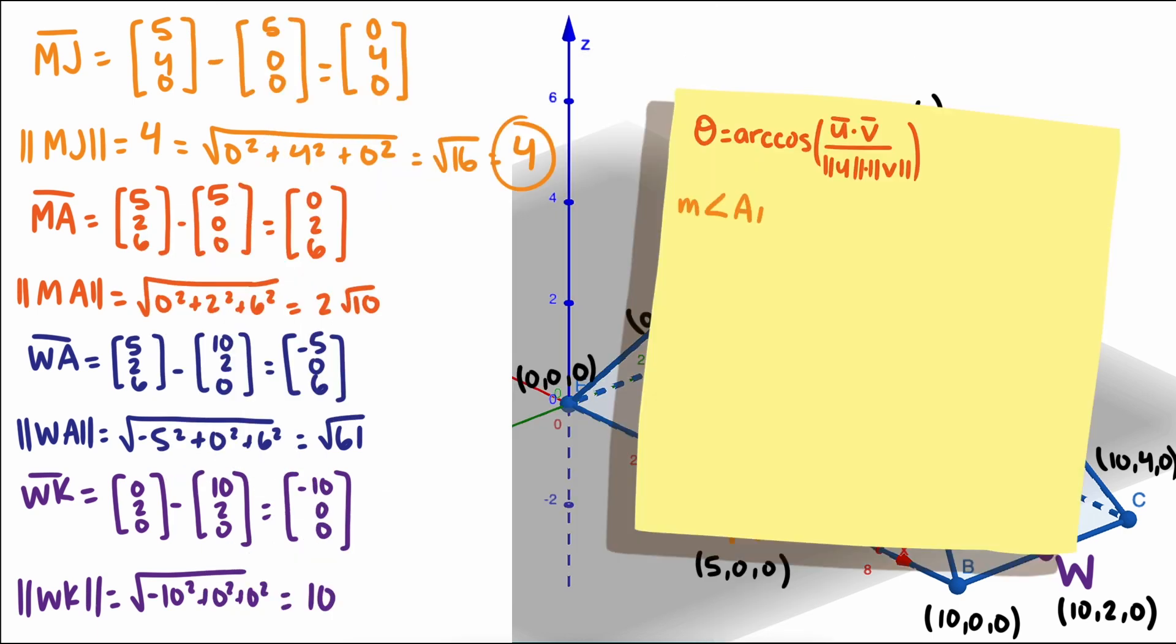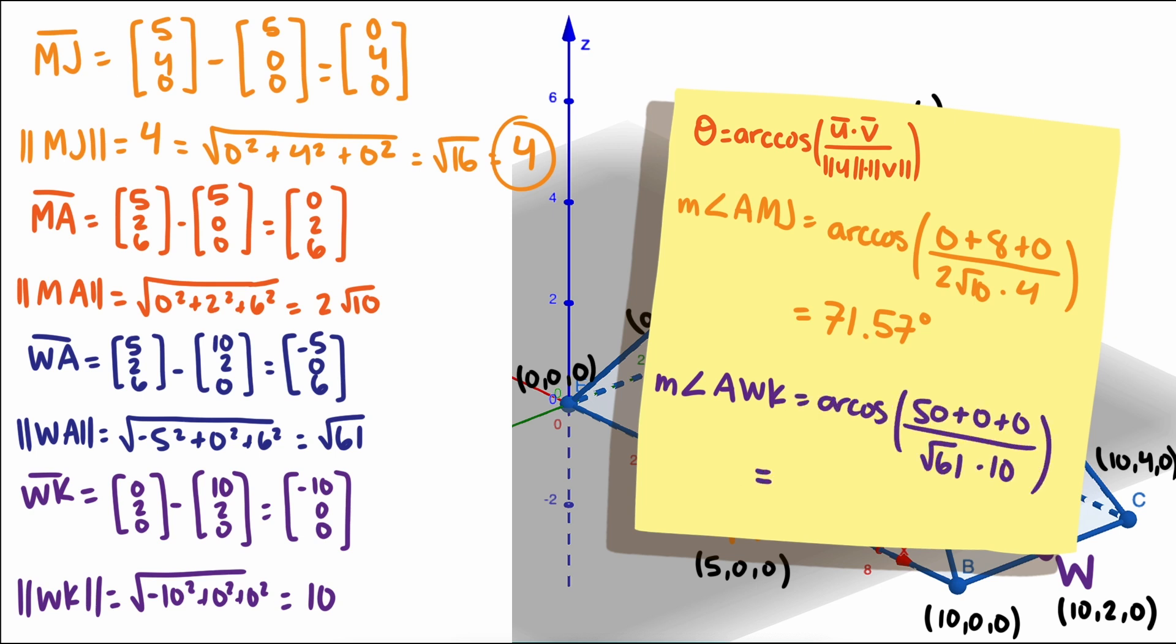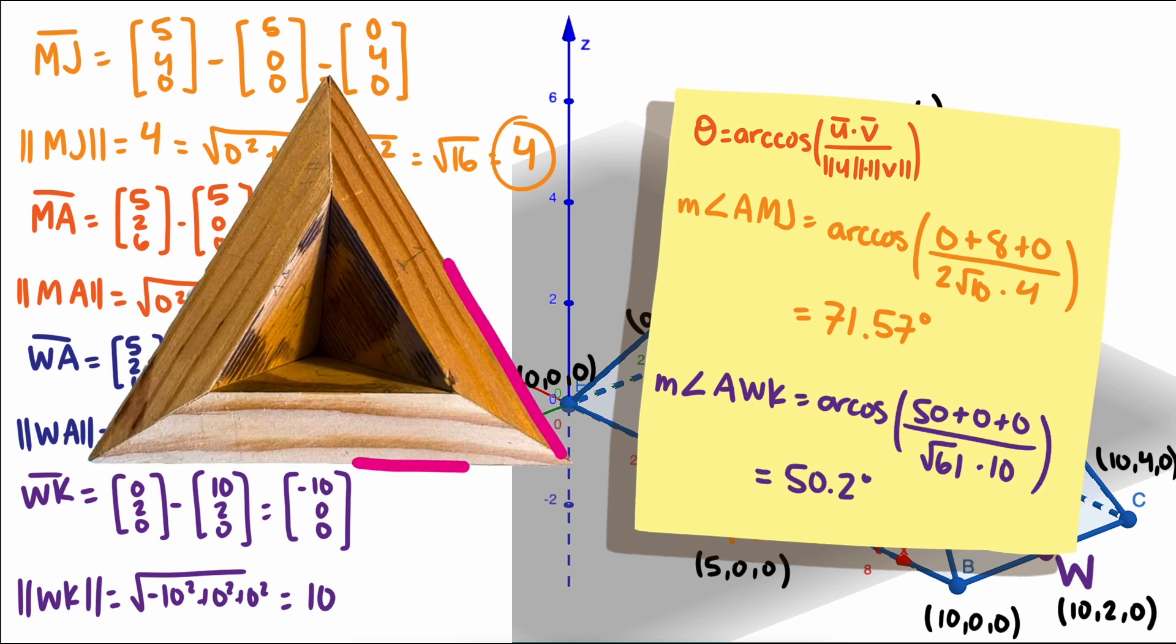Now let's do the same process for all other vectors we need. Plugging these into our formula, we get that the measure of AMJ is about 71.6 degrees, and the measure of AWK is about 50.2 degrees. To make our pyramid pieces, we need to cut these in half, so we'll set our saw blade to 35.8 and 25.1 degrees, respectively.